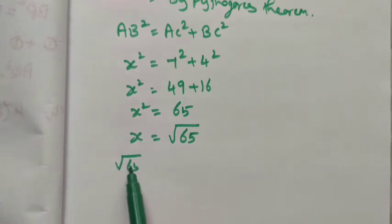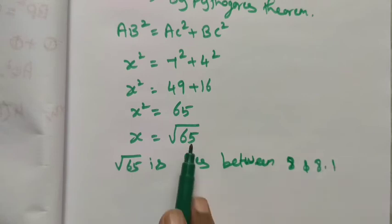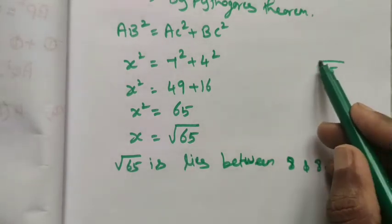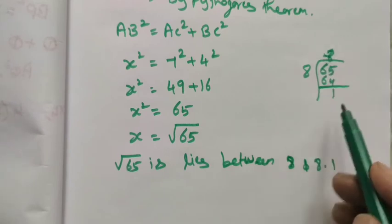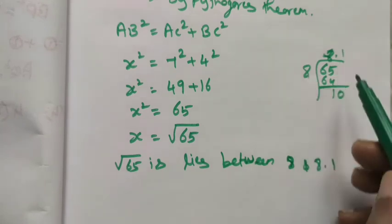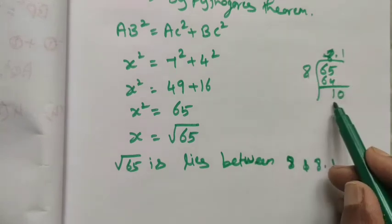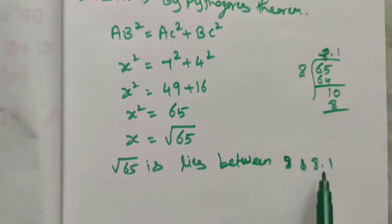√65 lies between 8 and 8.1 because 8²=64. Rounding to the nearest tenth place, the answer is 8.1 feet.